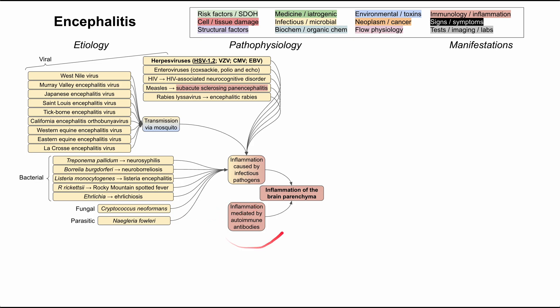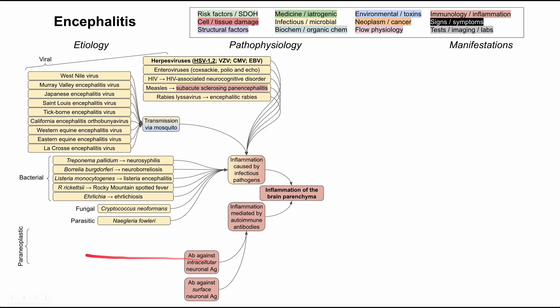Next, let's turn to autoimmune encephalitis. This can be broken down into causes with an antibody against an intracellular antigen and those with an antibody against a surface antigen. In both cases you are attacking neurons — either from the inside via an intracellular antigen, or from the outside via a surface antigen. Those with an intracellular antigen are largely paraneoplastic, meaning a concurrent neoplastic disorder is driving the creation of these autoimmune antibodies.